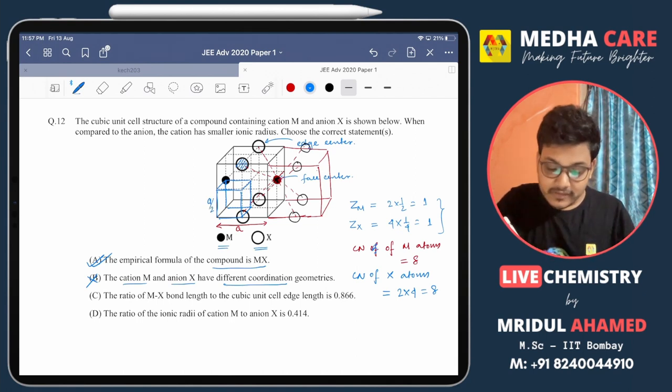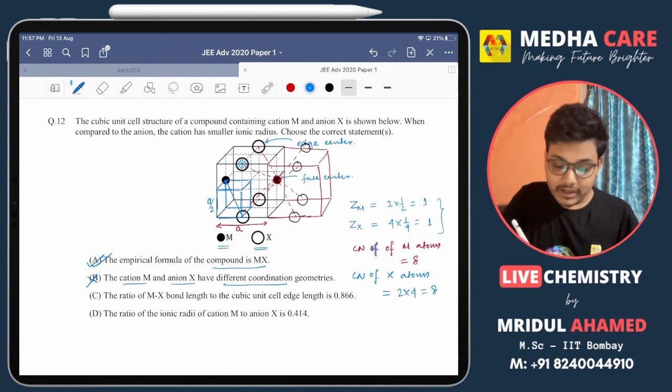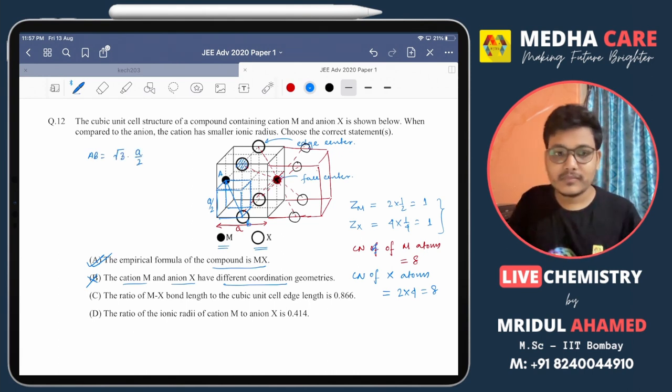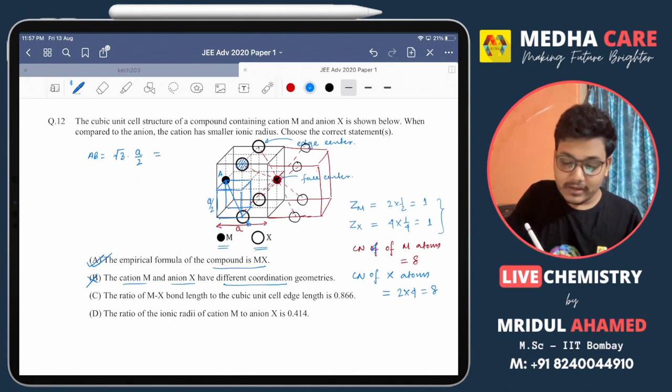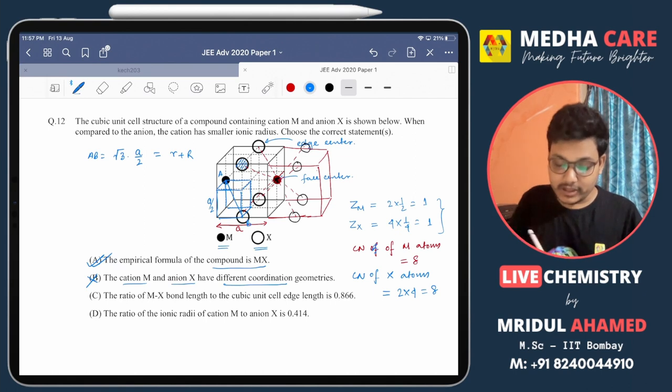You can see this is the body diagonal of the small cube, and that body diagonal AB will be root 3 into a by 2, and that is equal to r plus R. We consider small r is the radius of cation and capital R is the radius of anion. So that will be the MX bond length.